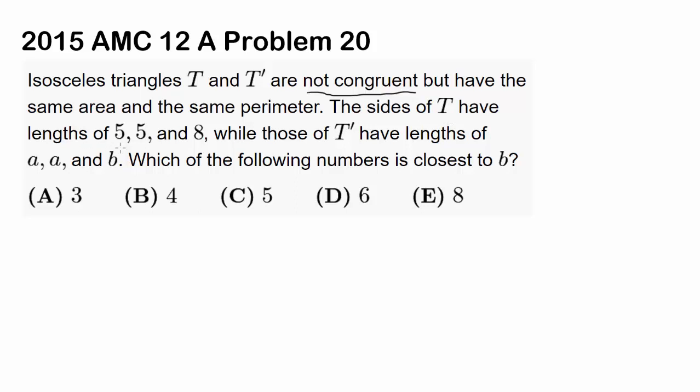The sides of T have lengths of 5, 5, and 8, while those of T' have lengths of A, A, and B. Which of the following numbers is closest to B?